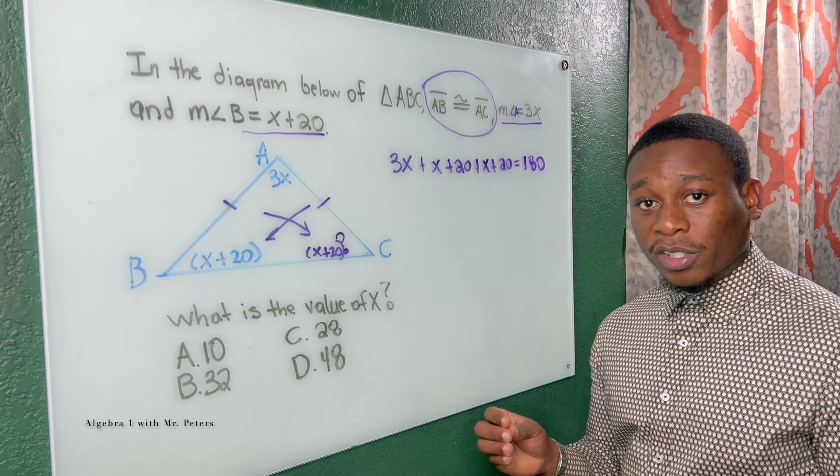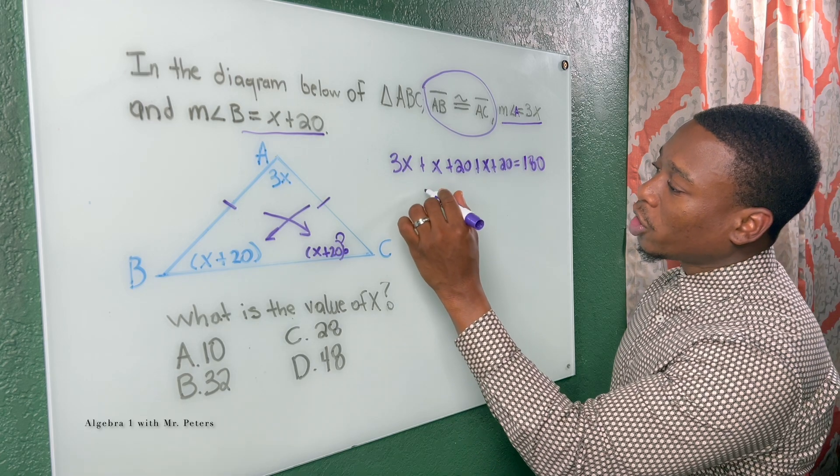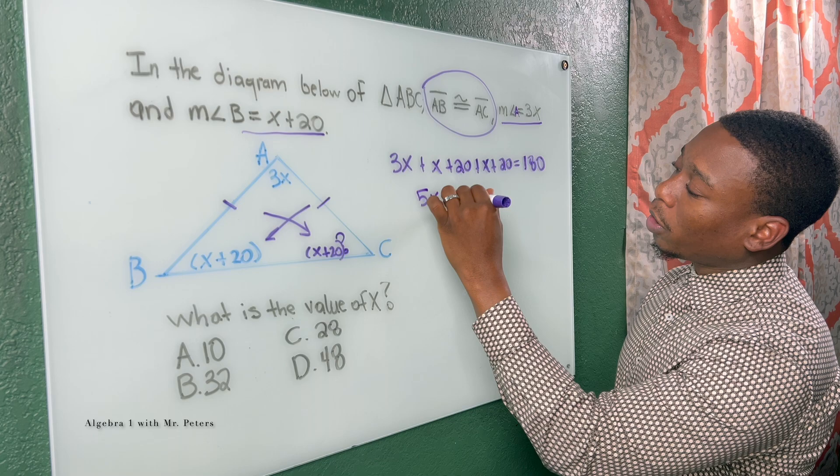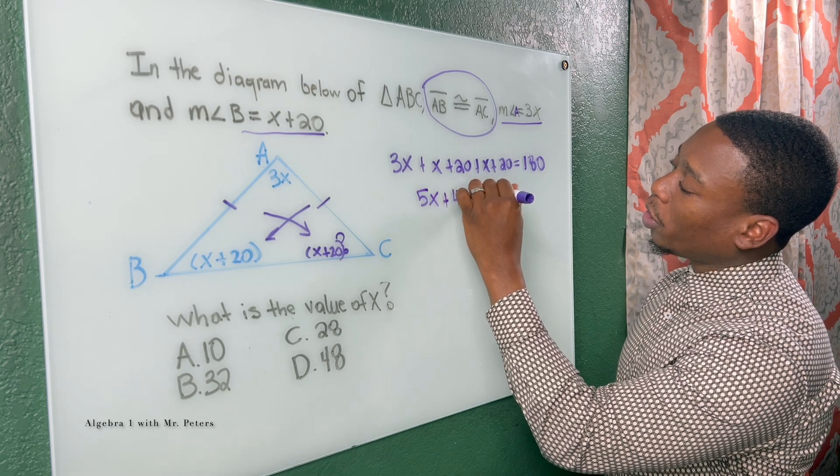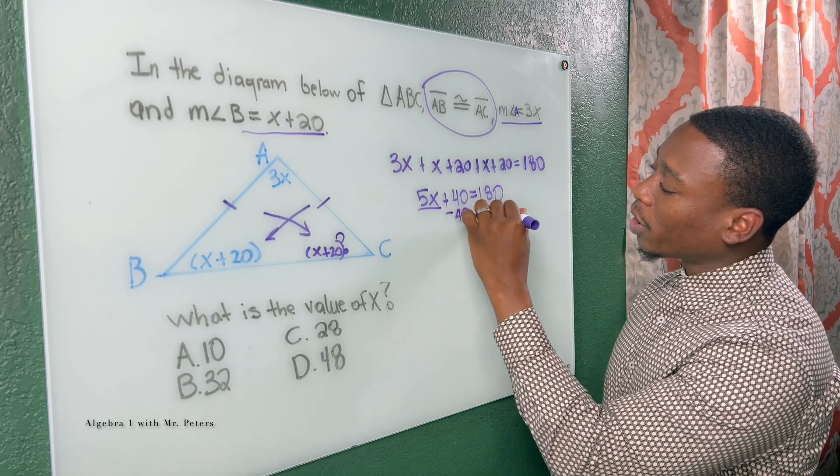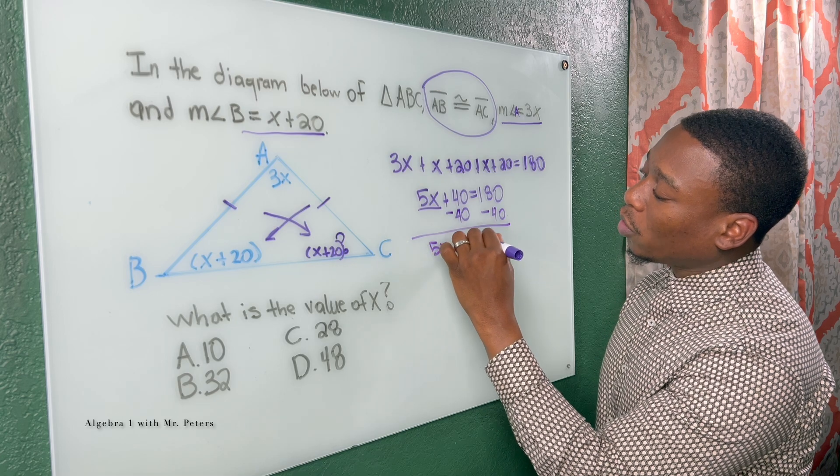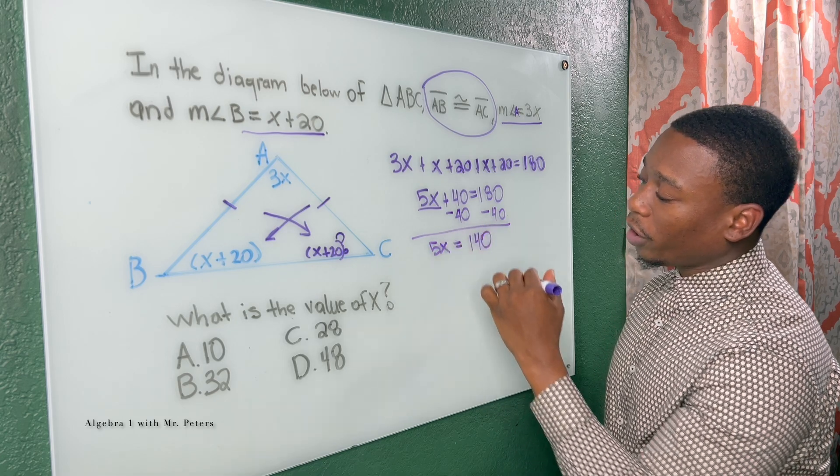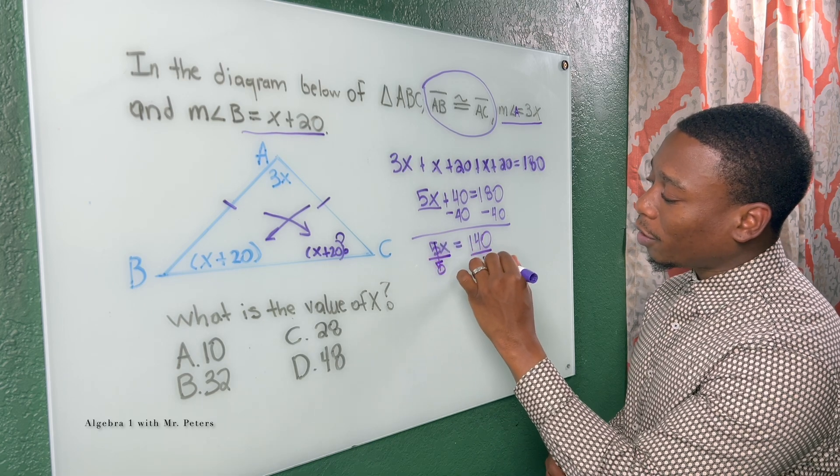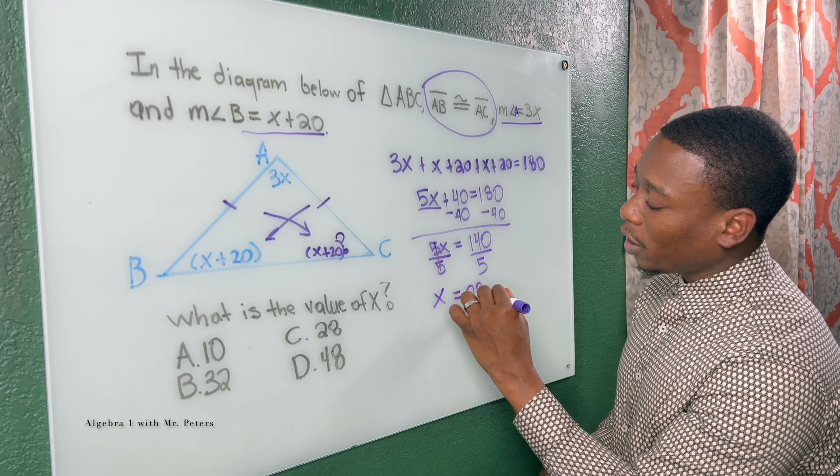And now we're just going to solve like a regular equation and find out what is X. So I combine my like terms to get 5X plus 40 is equal to 180. So we're trying to get X by itself. So we're going to subtract 40 from both sides. I'll have 5X is equal to 140. Now when I divide by 5 to get X by itself, I know X is equal to 28.